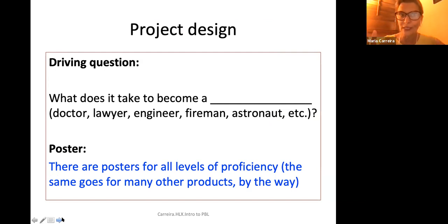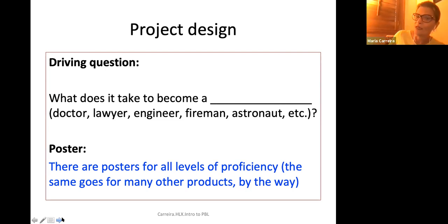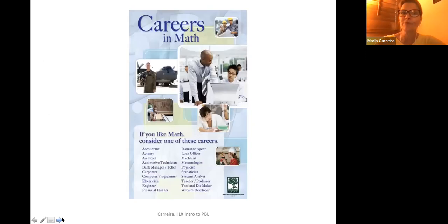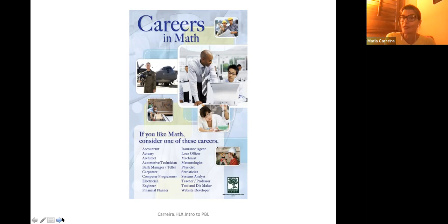If you go online and start looking at posters, you'll find that they come at all levels of proficiency — same thing goes for just about any product you can think of. Here's a book jacket that's fairly simple, and this one's even simpler. Here's a poster that answers the question: what are the careers in math? Notice how simple the language is — 'If you like math, consider these careers' — and then they just list careers. You can come up with: if you like talking to people, these careers; if you like science, these careers; if you like adventure, these careers.